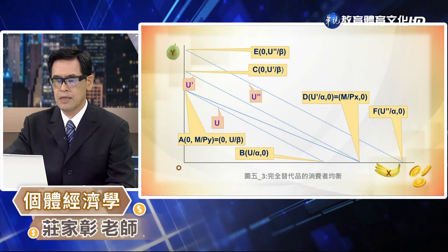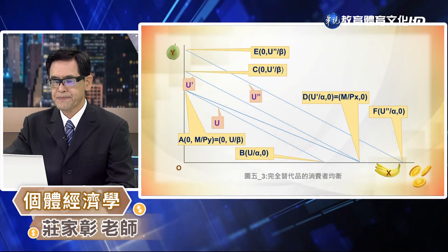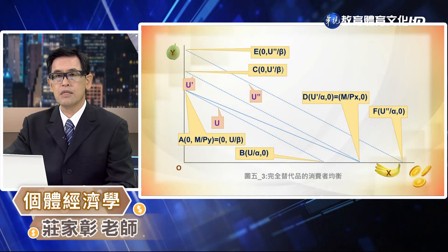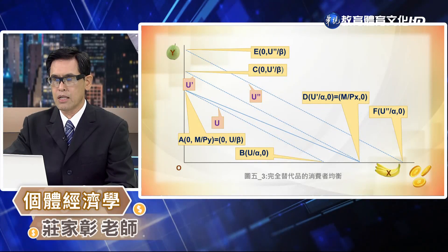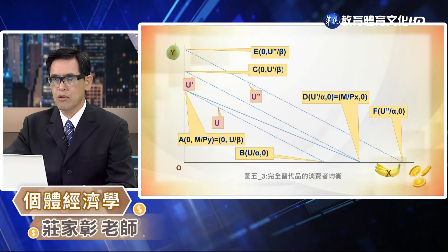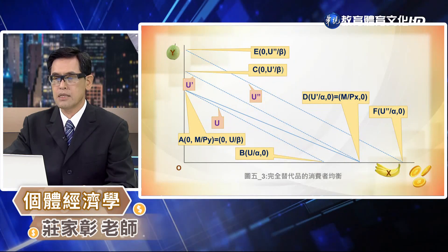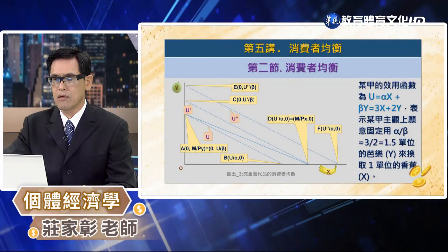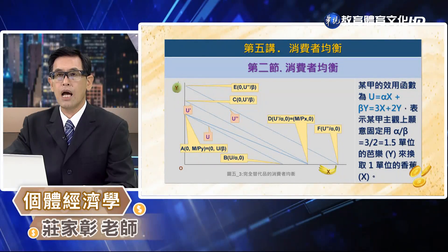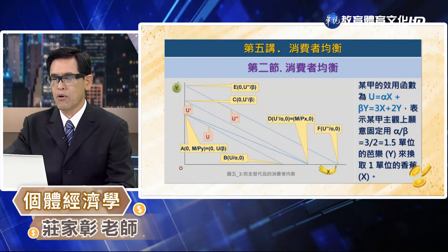在消費者效用極大化的假設之下，消費者應該會選擇 U' 的效用水準，也就是在這種情況下消費者會把他的所得全部用來購買香蕉而不是巴勒，巴勒的消費數量是等於0。以舉例來講，譬如說模甲認定兩單位的香蕉和三單位的巴勒是完全替代的商品，這個時候我們就可以用效用函數 αX + βY = 3X + 2Y 來代表它的效用函數。